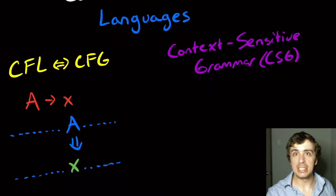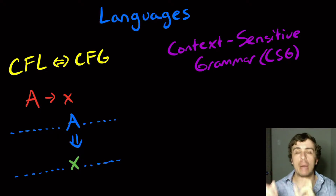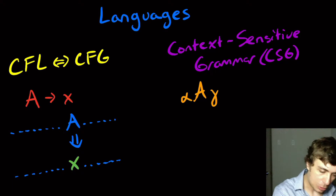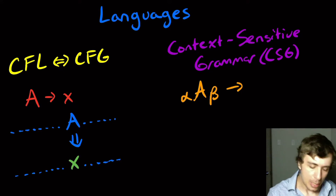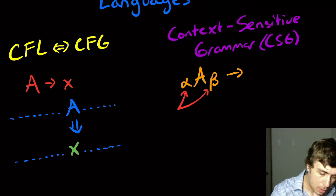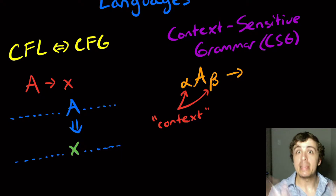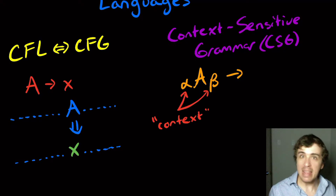So what is a context-sensitive grammar? If you want to apply a variable replacement, you need to know the context around it. All of the rules have a certain form: alpha A beta → alpha X beta. The alpha and beta here are the context in which A appears. We don't want to change the context in which the variable occurs — it's just that we only allow ourselves to apply the rule in this particular context.